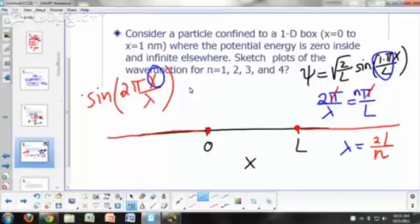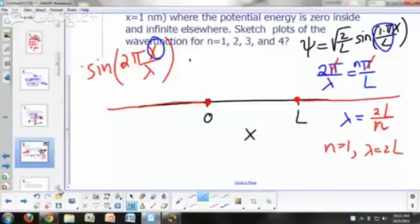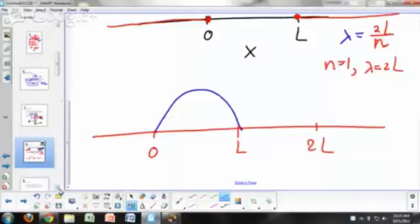So for n equals 1, what's our lambda? When n equals 1, lambda equals 2L. So for n equals 1, what would your sine function look like? Zero to L. The wavelength is 2L. So this is 2L. Our sine function is going to look like this. And why am I putting dashed lines, a dashed curve outside x equals L? Because that sine function is only applicable within the box, from 0 to L. So that's your sine function.